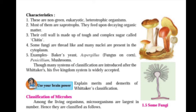The characteristics of Kingdom Fungi are: these are non-green, eukaryotic, and heterotrophic organisms. Most of them are saprotrophs — they feed upon decaying organic matter. Their cell wall is made up of a tough and complex sugar called chitin. Some fungi are thread-like and contain many nuclei in the cytoplasm. Examples include baker's yeast, Aspergillus, fungus on corn, and mushrooms.